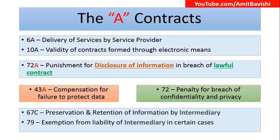This information is exchanged through contracts with several intermediaries. So Section 67C came into force — that is Preservation and Retention of Information by Intermediaries. Intermediaries must preserve and retain the information of their clients. Since the intermediaries are retaining and preserving some information, they will be asked to provide it at some point. But if they disclose the information straight away, then 72A or 43A will be applicable. However, if the law or a court demands that information, Section 79 came into force, which gives the exemption from the liability of an intermediary in certain cases.